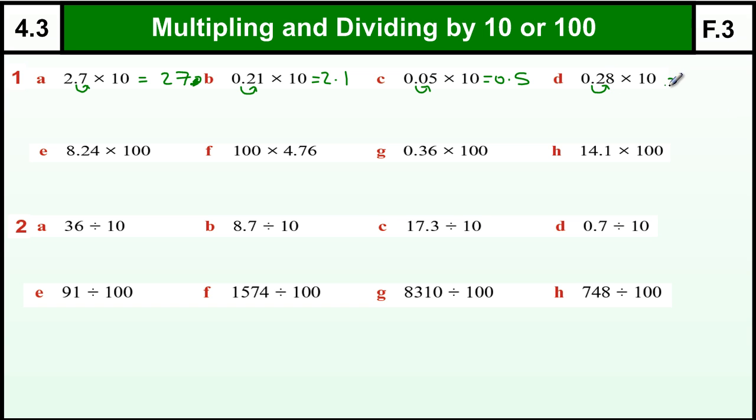Now sometimes people get a little confused which way does the decimal point move. Well, when you times it by 10 you're making something bigger, so you move the decimal point to make the answer bigger. When you times it by 10 you move it one place. When you times it by 100 you have to move it two places, once because you times it by 10 and then again because you times it by another 10, because 100 is times it by 10 and then another 10.